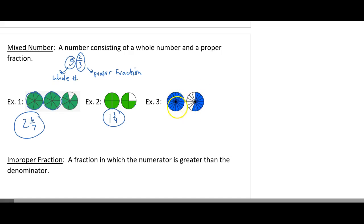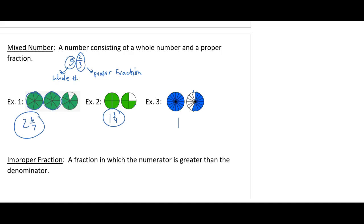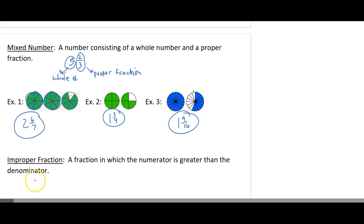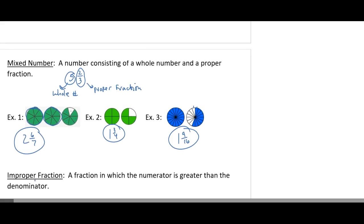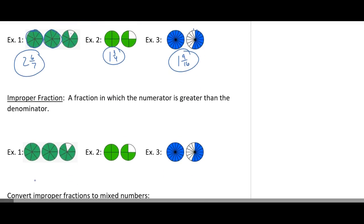So then the next one — how many wholes do I have here? I have 1 whole. And then how many parts is this whole broken up into? Counting the pieces, we have 16 parts. And out of the 16, we have 9 shaded. So we have 1 and 9 sixteenths right here. A mixed number has a certain number of wholes, and then 9 out of 16 partials.